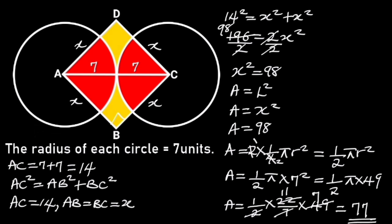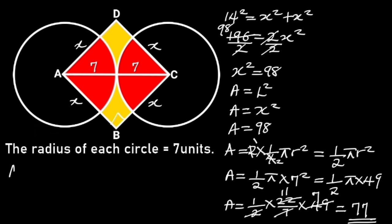Now we know the area of the square, which is 98 square units, and the area of the 2 quarter circles, which is equal to 77 square units. Let's go ahead and find the area of the shaded portion. The area of the shaded portion is equal to 98 minus 77, which is equal to 21 square units.